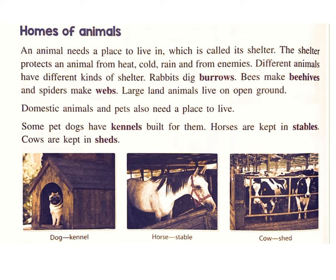Different animals have different kinds of shelter. Rabbits dig burrows. Bees make beehives and spiders make webs. Large land animals live on open ground. Domestic animals and pets also need a place to live.